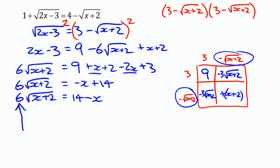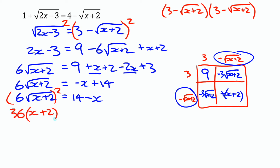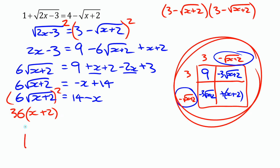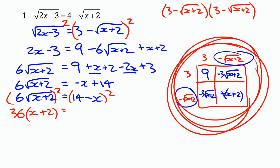Rather than dividing by 6 and getting an algebraic fraction, since the right side is a single term — just 6 times the square root — I can square both sides as is. Squaring the right gives 36 times (x plus 2). The left side has two terms so I do need to expand: 14 squared is 196, minus 28x, plus x squared.